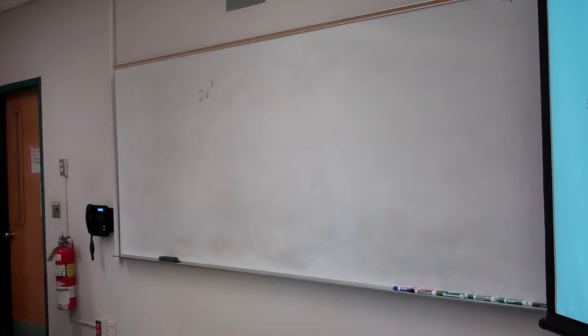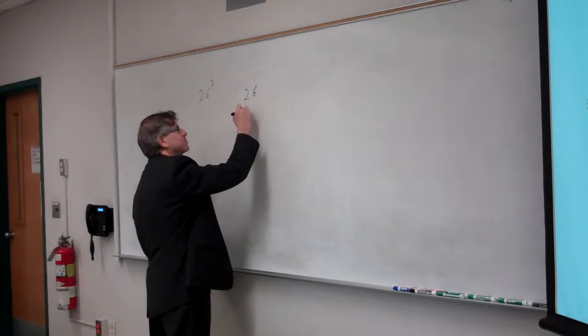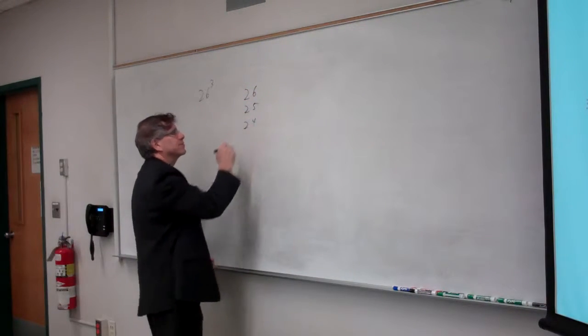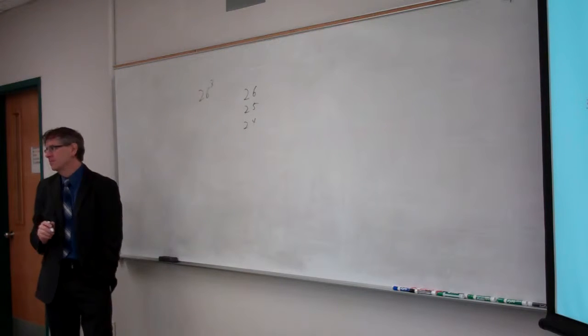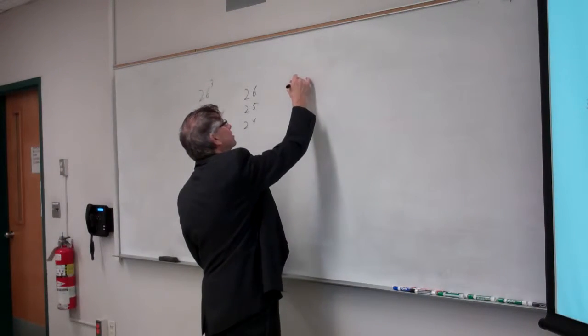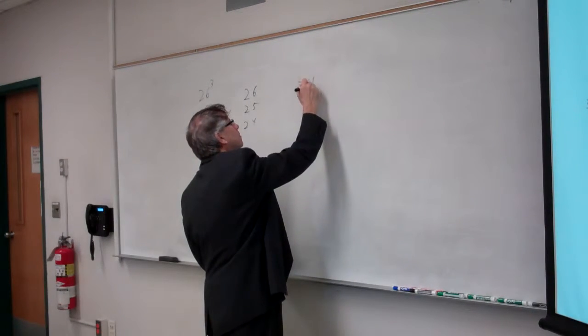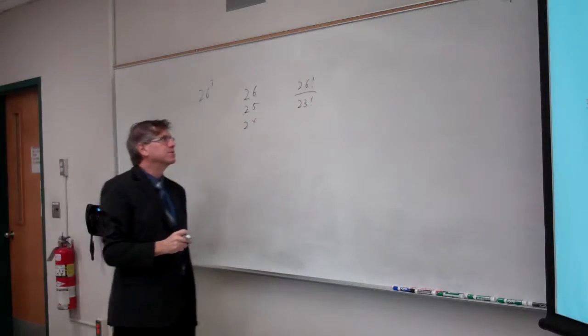Question 3, same thing, but you can't repeat. 26 ways to pick the first initial, 25 for the second, 24 for the third. So it's the number of three combinations, three permutations. Which is also this.